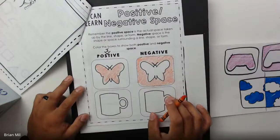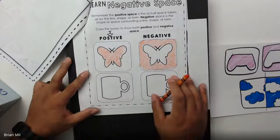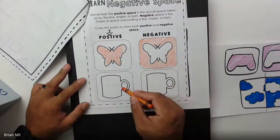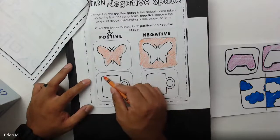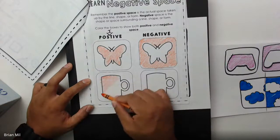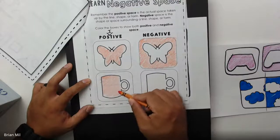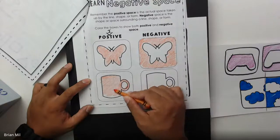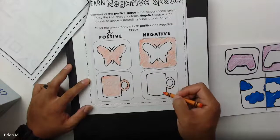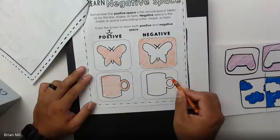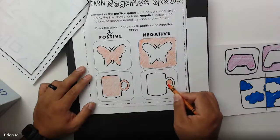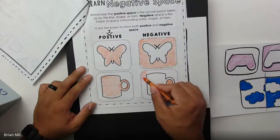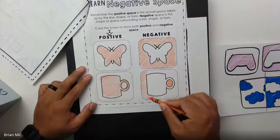Good job. Now, the same thing for the mug, but the mug has something a little different — there's a hole. That means the positive space is just the space where the shape is, so I have to avoid that center oval. On the negative space side, that interior oval is still left over, so I have to color in that section even though it's inside the shape, plus the outside area. That's the negative space.